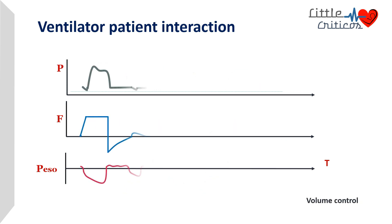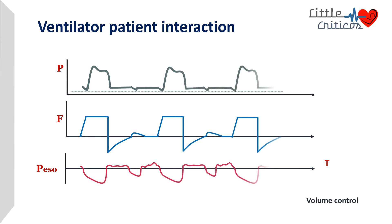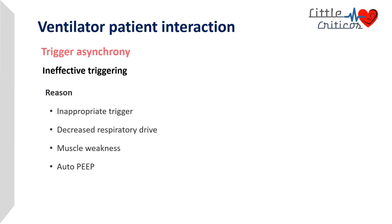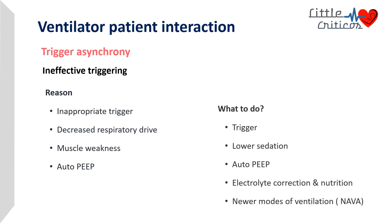The same has been depicted in volume-controlled mode of ventilation. Ineffective triggering commonly occurs due to inappropriate trigger setting, decreased respiratory drive, muscle weakness, and auto-PEEP. It is important to lower the trigger threshold appropriate for the condition and age, adjust sedation, correct auto-PEEP with bronchodilators, and ensure adequate correction of electrolytes and nutrition. In cases where ineffective triggering does not respond to corrections, newer modes like NAVA may be tried.